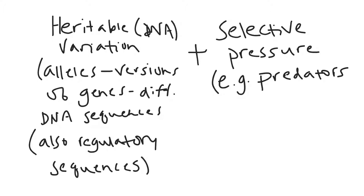For example, with the rock pocket mice the selective pressure is the predators — whether you're getting eaten or not. Another example would be if there's not enough food: some individuals may be better at getting food than others. Also, if there are different food types, for example the finches on the Galapagos have beaks of different shapes, so some can eat different sorts of food sources. If you only have one sort of food source on an island, the finches with beaks that are better at eating that food source will have an advantage.